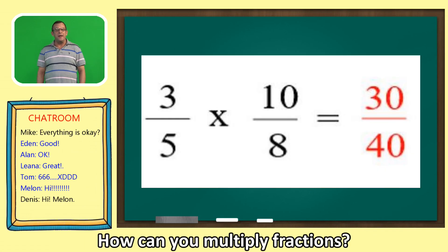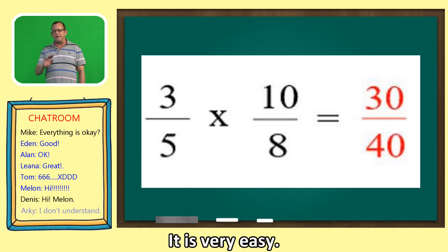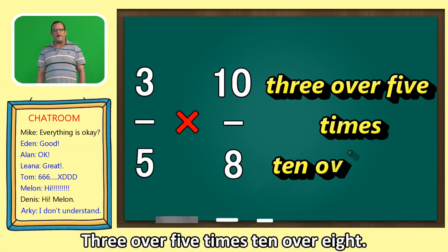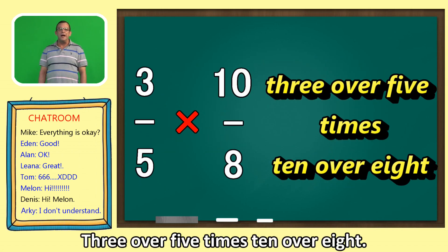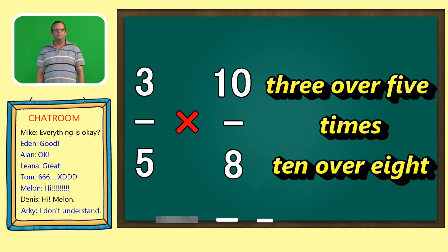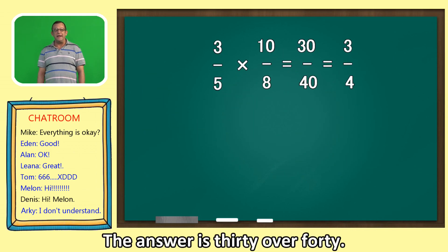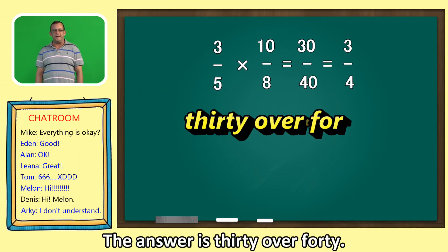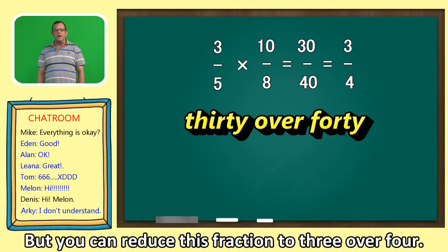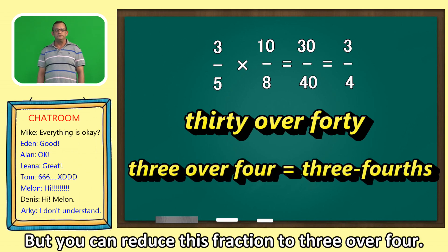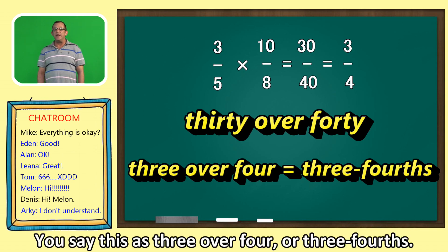And you multiply fractions. It's very easy. 3 over 5 times 10 over 8. The answer is 30 over 40. But you can reduce the fraction to 3 over 4. You say this as 3 over 4 or 3 fourths.